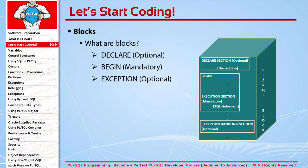The EXCEPTION keyword is optional — if you don't think your code will have any exceptions, you don't need to write it. You should know that coding mistakes like writing wrong text or forgetting a semicolon are not considered exceptions — these are compile errors, and your tool will force you to fix them before running. Exceptions are for logical errors that the compiler cannot find; you face them when your code is running.